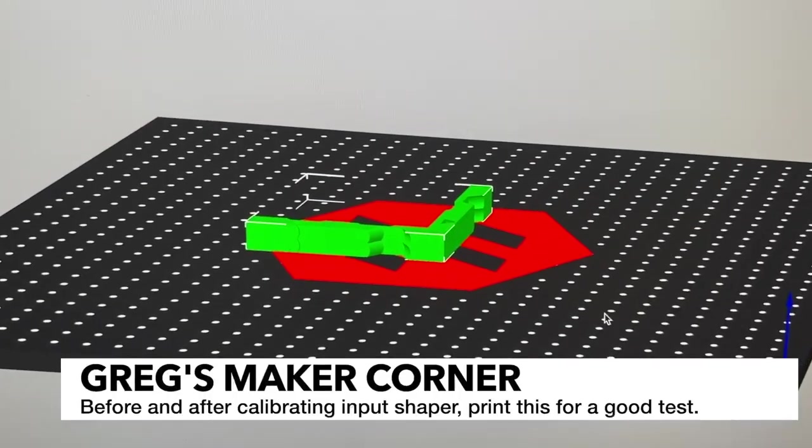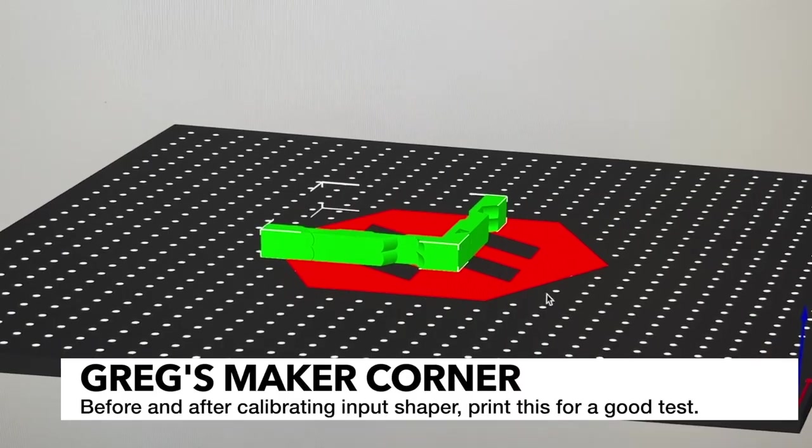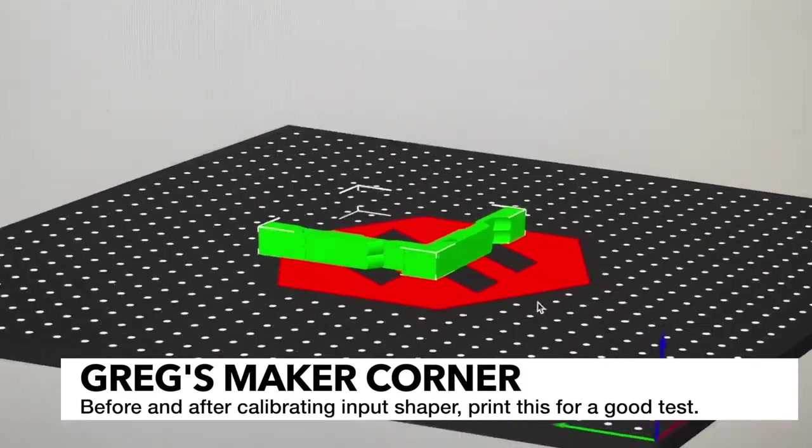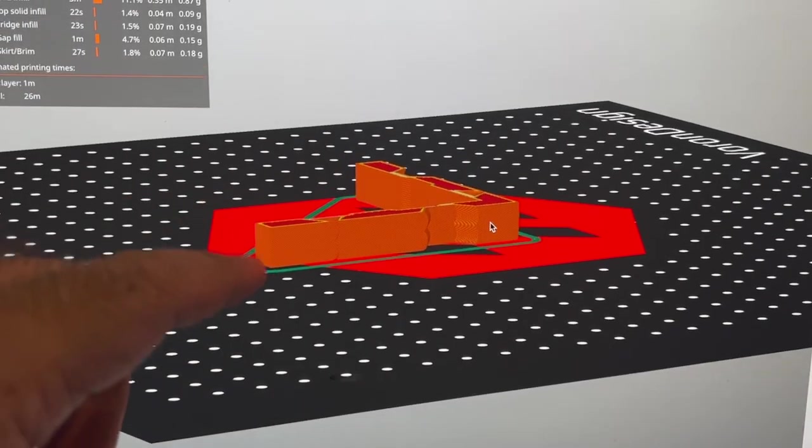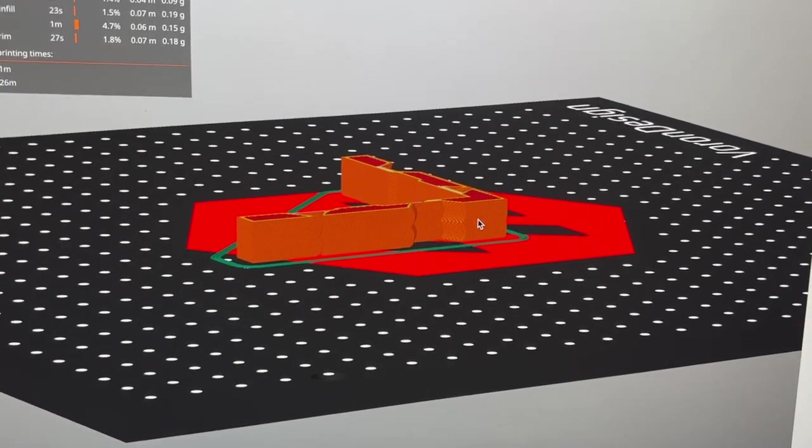The thing that I really like to test is this ringing tower. Now I've already cut it down to 10 millimeters because I think that's really all you need. And I will have a copy of both the full height one and the shortened one in my link in the video description.